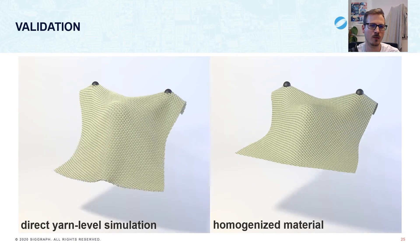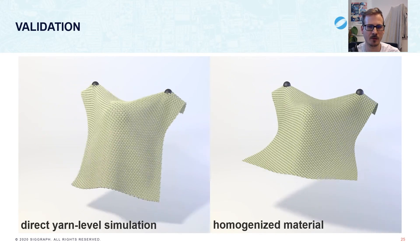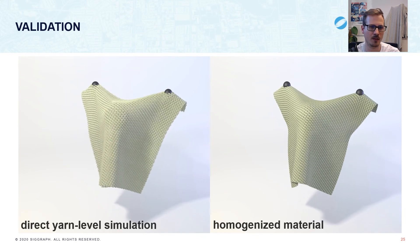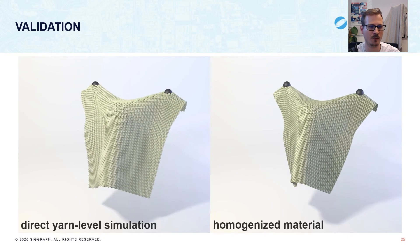Here, we see a woven cloth being draped over a sphere. Our homogenized material on the right is able to reproduce the drape shape of the direct simulation on the left, which means that we were able to capture the bending and stretching stiffness of the pattern.